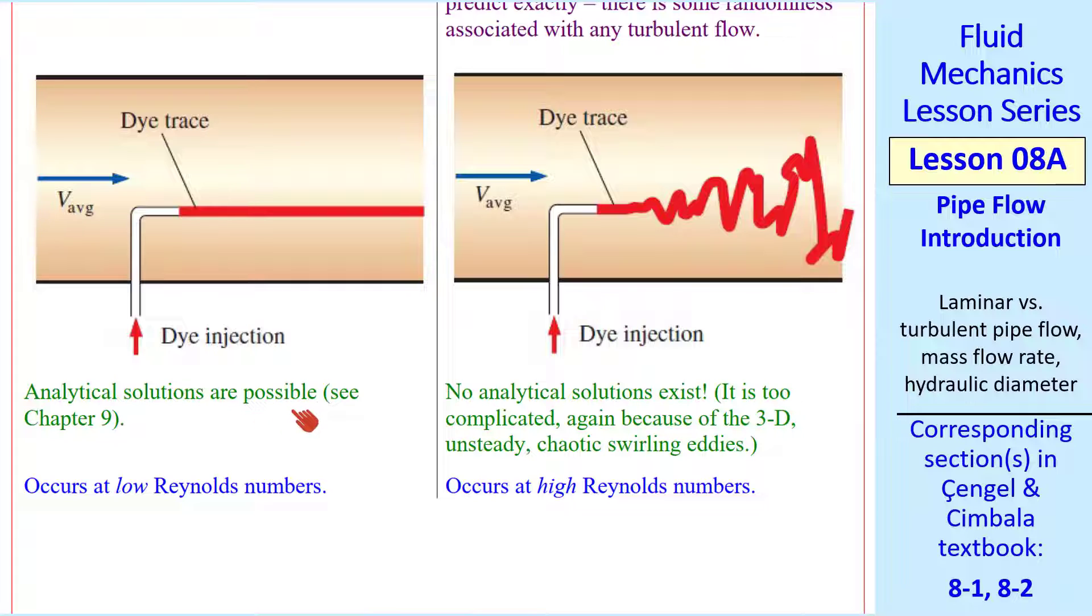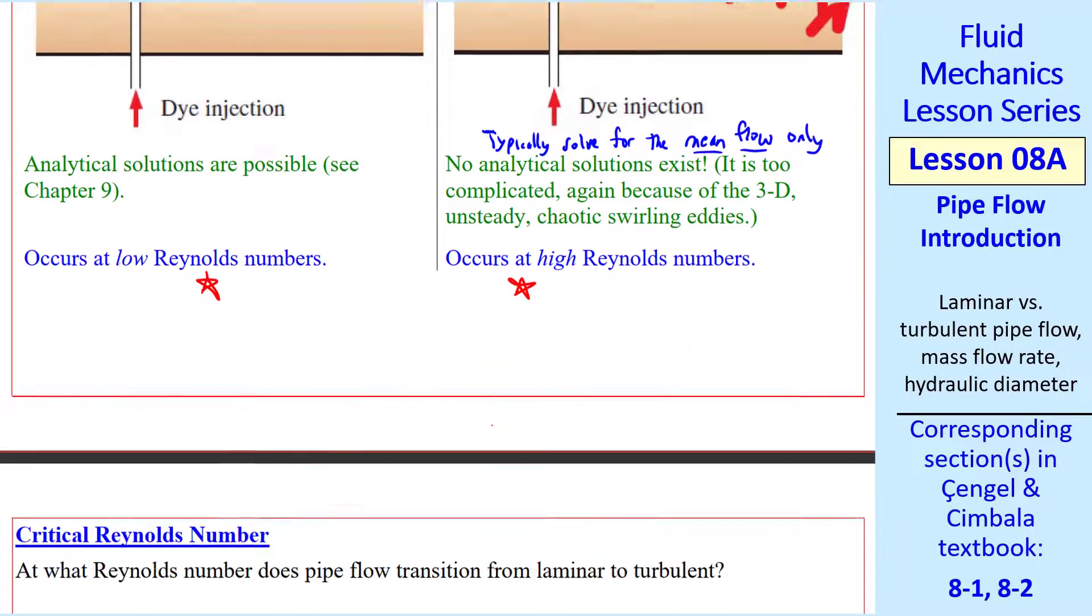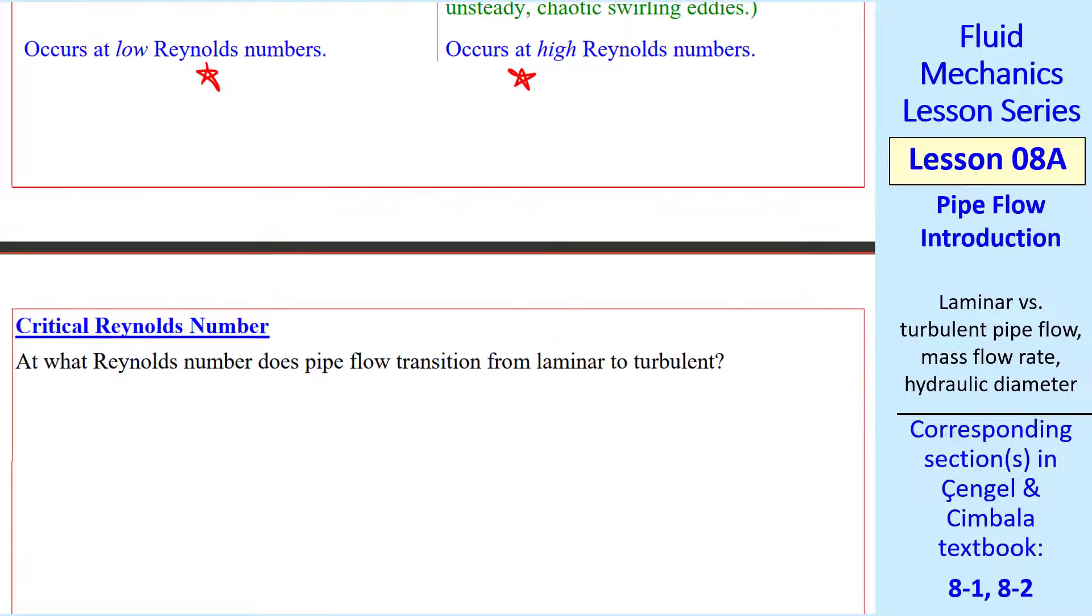For laminar flow, analytical solutions are possible. We do some of those in chapter 9 of the Çengel and Cimbala textbook. For turbulent flow, no analytical solutions exist. It's too complicated because of the unsteady 3D chaotic eddies. So typically we solve for the mean flow only. For the purposes of this course, it's important to know that laminar flow occurs at low Reynolds number and turbulent flow occurs at high Reynolds number.